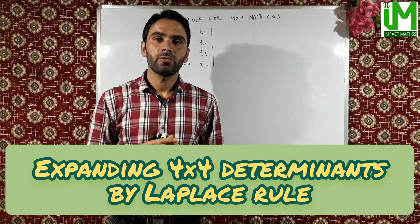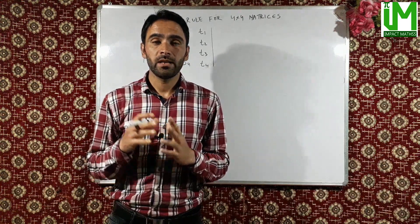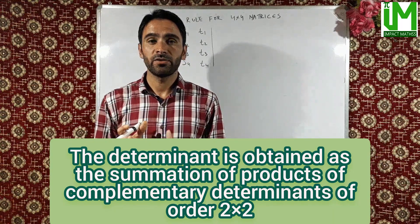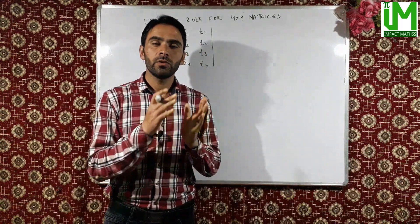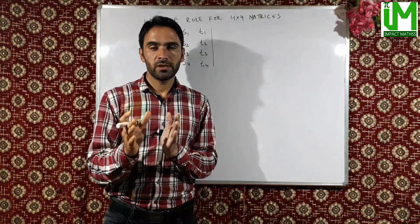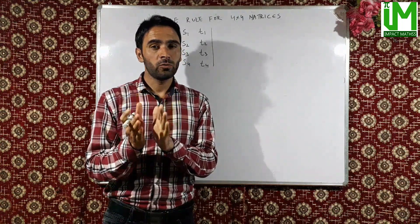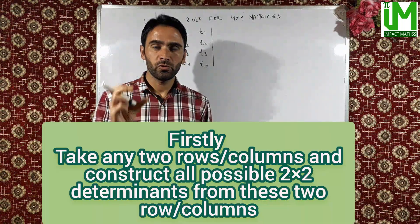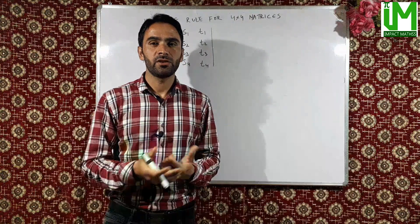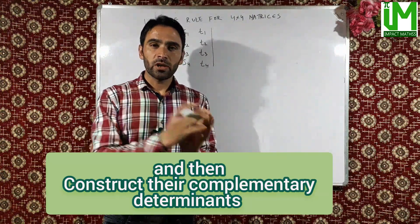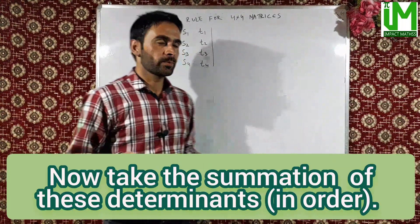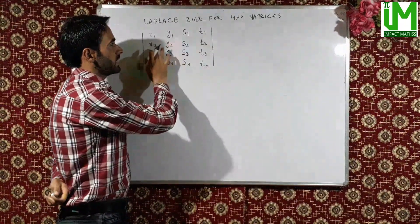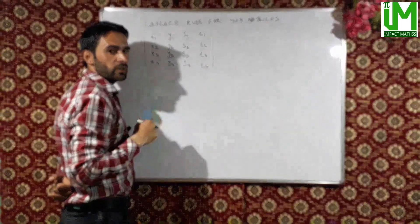Now the expansion of 4x4 determinants by Laplace rule. The expansion is obtained by the summation of the product of all possible 2x2 determinants formed from two selected columns and their complementary 2x2 determinants formed from the remaining two columns. Say we have a determinant with rows X1, Y1, S1, T1; X2, Y2, S2, T2; and so on. To expand by Laplace rule, we select two columns, say column 1 and column 2.